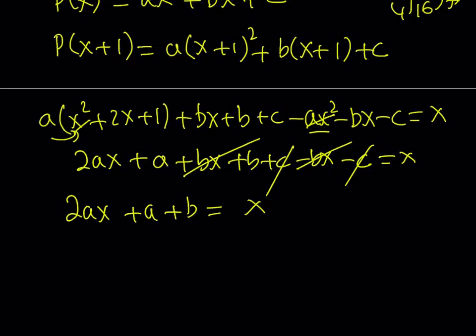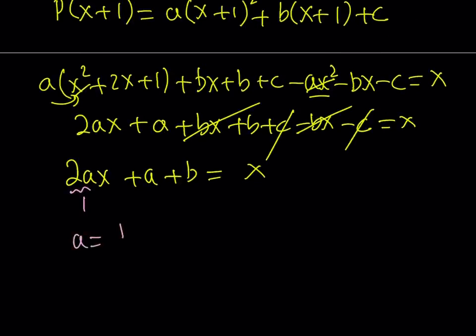Now, this is true for all values of X since these are both polynomials, and this is a general equation. So we can safely say that the coefficient of X needs to be the same on both sides. So here, 2A needs to equal 1, which means that A is equal to 1 half. And A plus B, now there is no constant on the right-hand side. Therefore, A plus B needs to be 0, which indicates that B equals negative 1 half. So we were able to find the values of A and B.